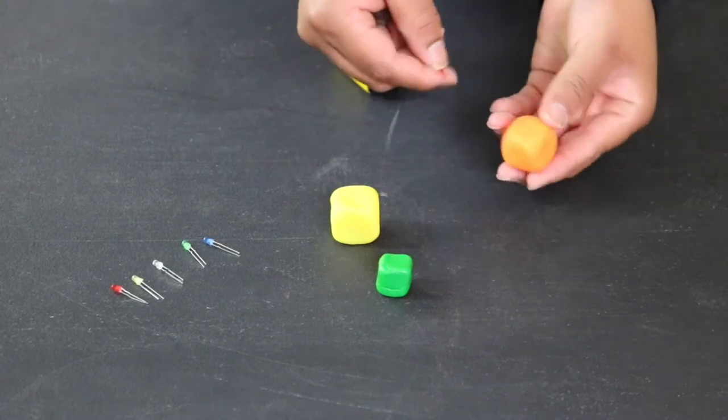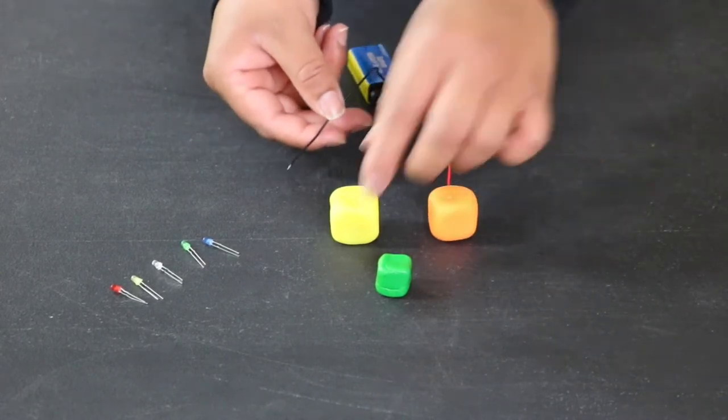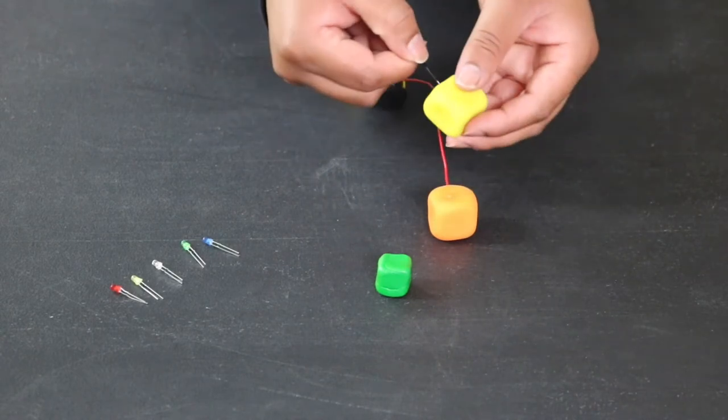As you can see, we have two wires. The red one, I will be plugging into the orange play-doh, and the black one, I will be plugging into the yellow play-doh.